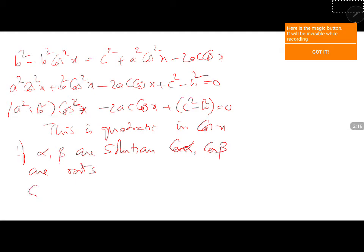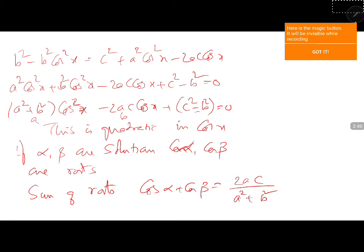So by sum of roots, cos alpha plus cos beta is equal to minus b by a, which means 2ac divided by a squared plus b squared. And by product of roots, cos alpha times cos beta is equal to c squared minus b squared divided by a squared plus b squared.